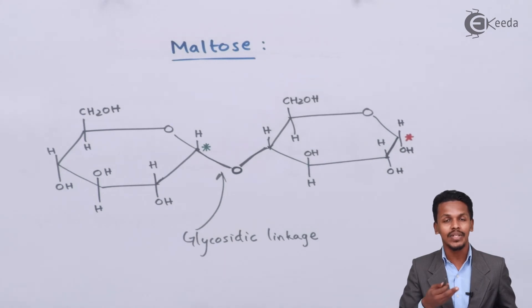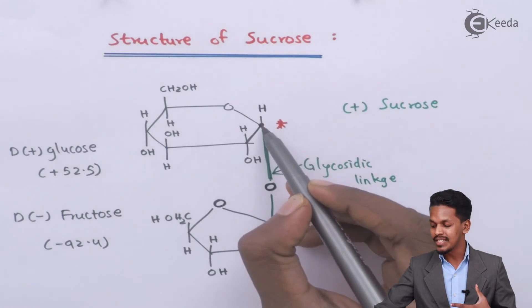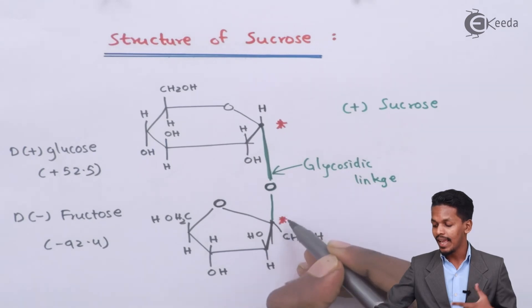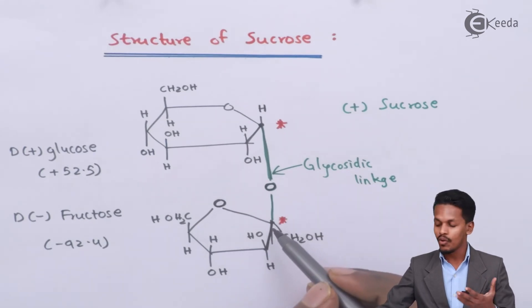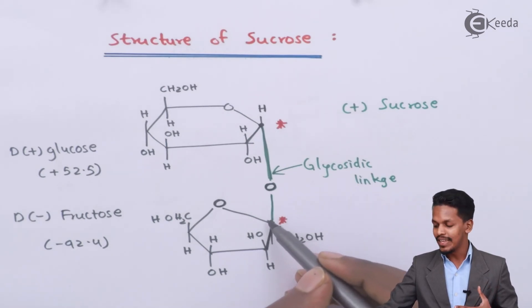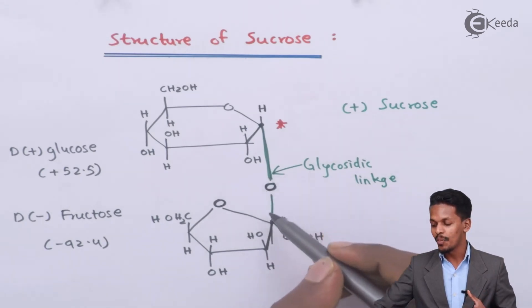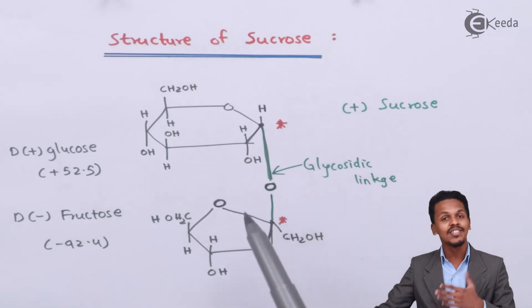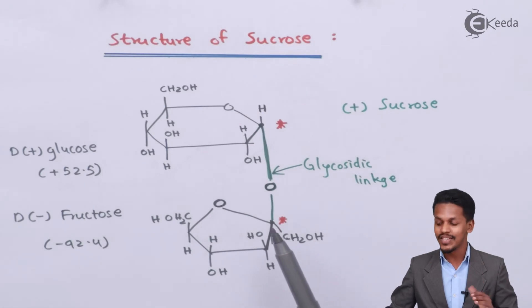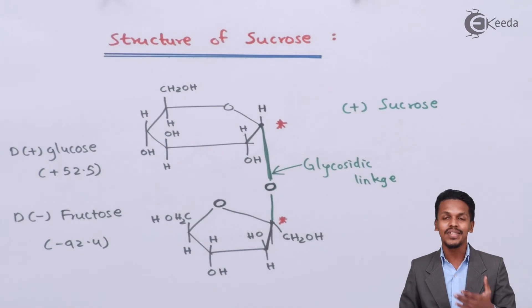In contrast, sucrose does not have a free carbonyl group — it has no free anomeric carbon atom that would react with Fehling's solution or Tollens' reagent. In sucrose, one anomeric carbon is involved in bonding with the oxygen atom, and the other anomeric carbon is also involved in bond formation. So there is no free carbonyl group left, meaning sucrose is a non-reducing sugar, while maltose is a reducing sugar.